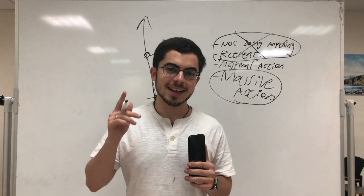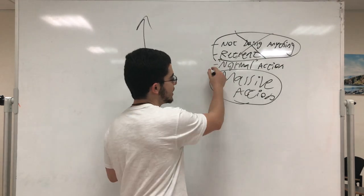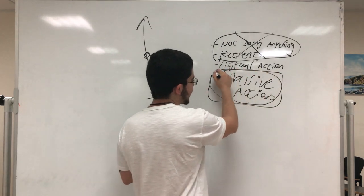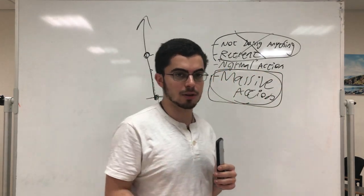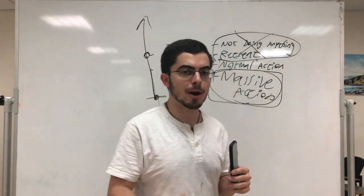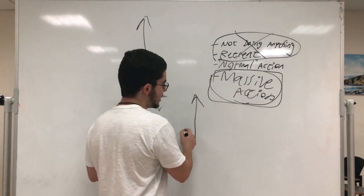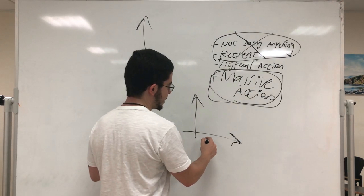So, the only type of action that will always get you a result is massive action. And how do you know you took massive action? Because you created a result. Something happened. You have new problems.